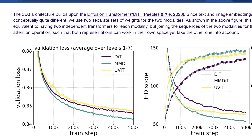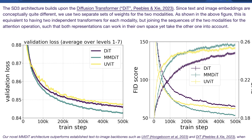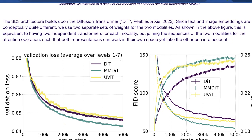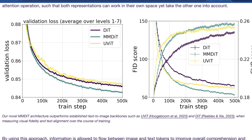Since text and image embeddings are conceptually very different, they use two separate sets of weights for these two modalities, which is equivalent to having two independent transformers for each modality and then joining their sequences together for the attention operation, so both operations can work in their own space while still having a notion of what the other is doing. As a result you get a much more cohesive output. This is different from the approach in Stable Diffusion XL, which processed them sequentially.